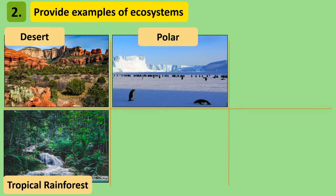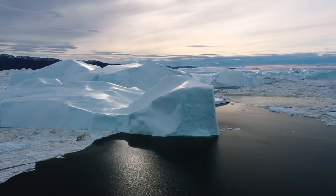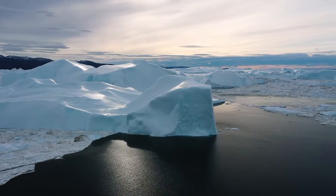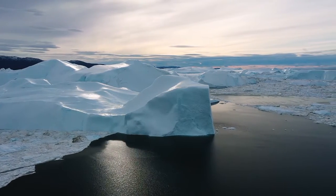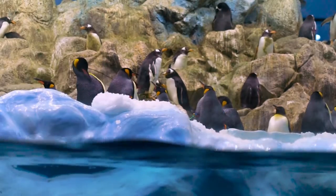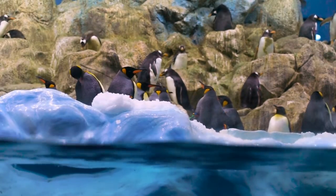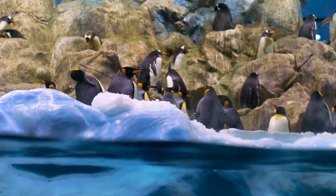Polar ecosystems are found at both ends of the globe, the Arctic and Antarctic. Polar ecosystems are like freezing cold deserts. They don't have lots of vegetation because of the cold, but also because there's very little rainfall, only snow and ice.